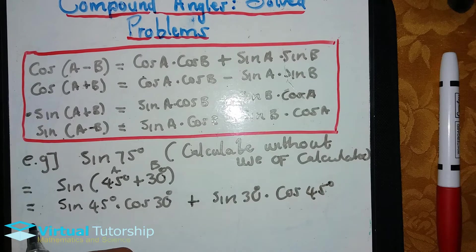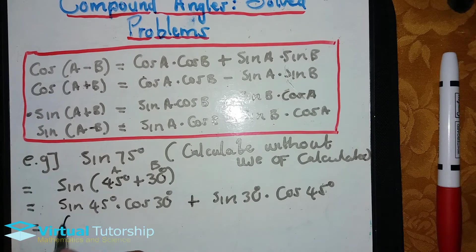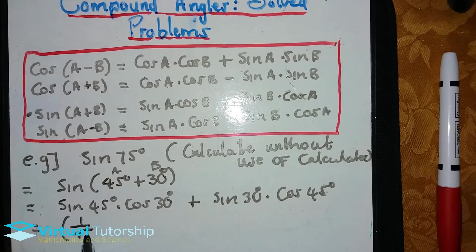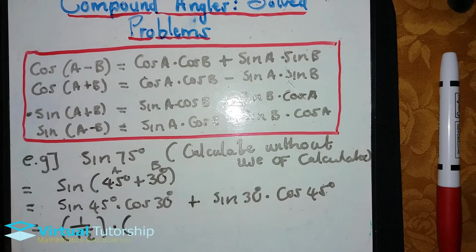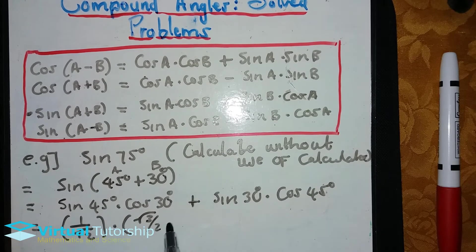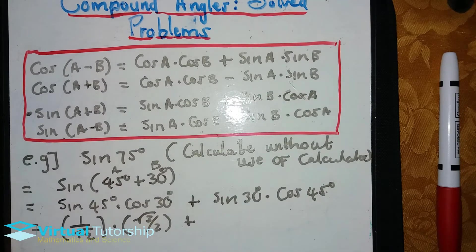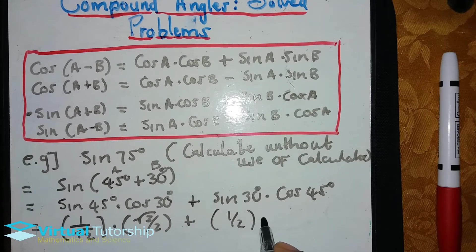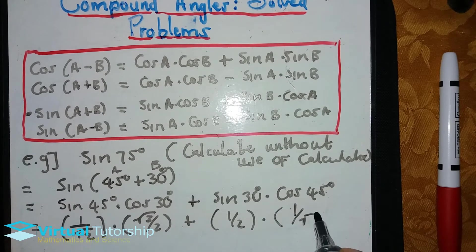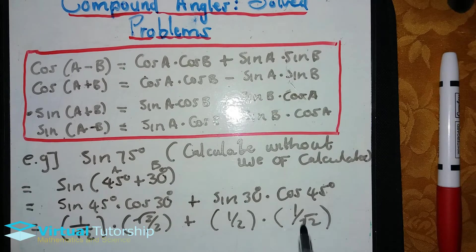So it's sine 45 which is one over square root two times cosine 30 which is square root three over two, plus sine 30 which is one half times cosine 45 which is one over square root two. So cosine 45 is one over square root two.